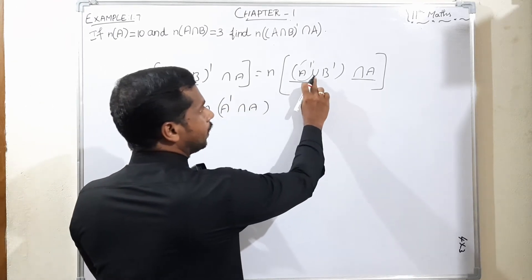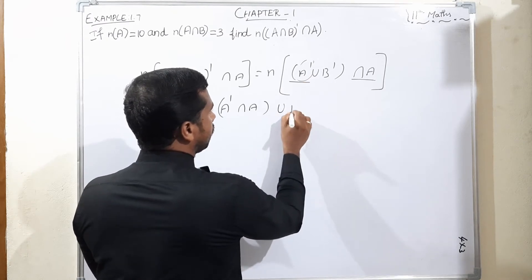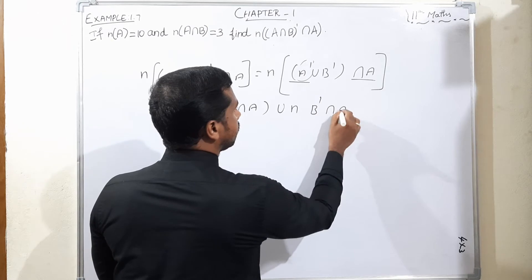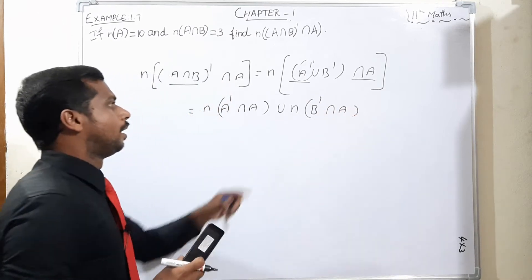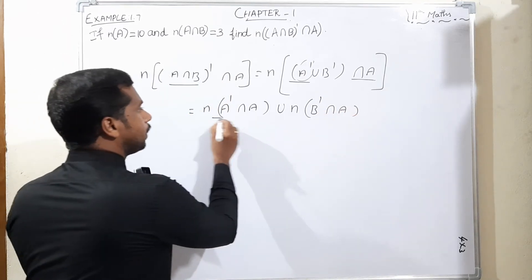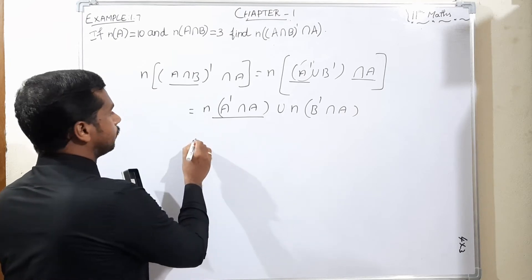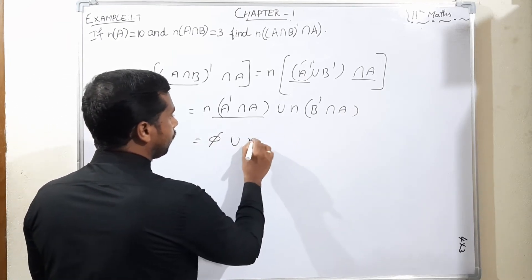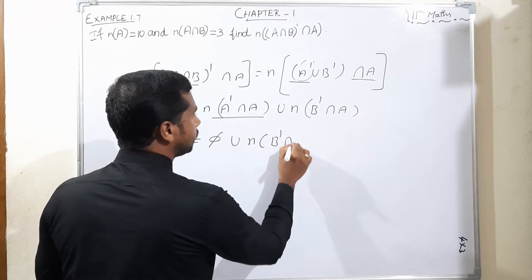First, then what is the condition? Union n(B'∩A). Isn't it? If we have the condition, this condition is the null set. Again, union n(B'∩A).